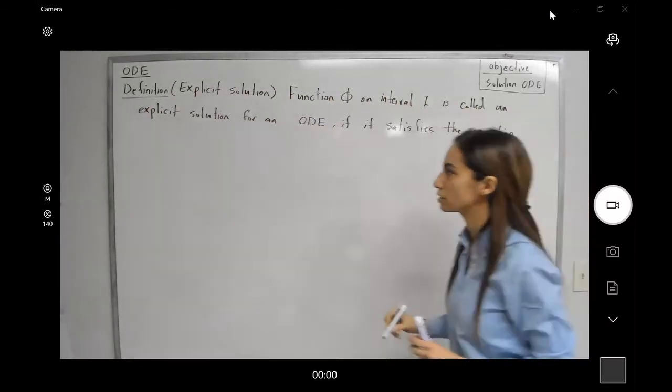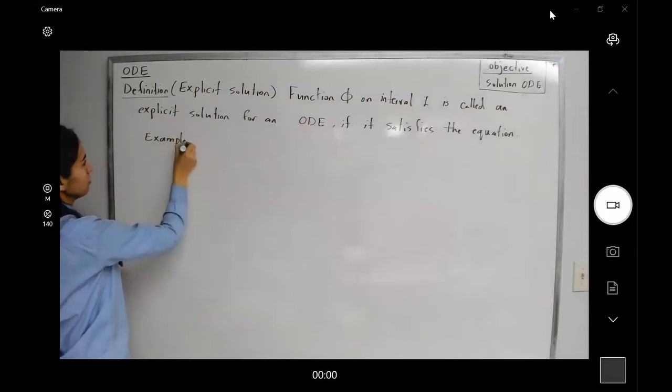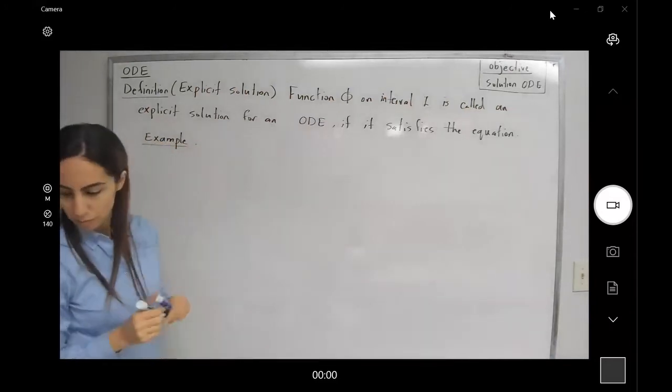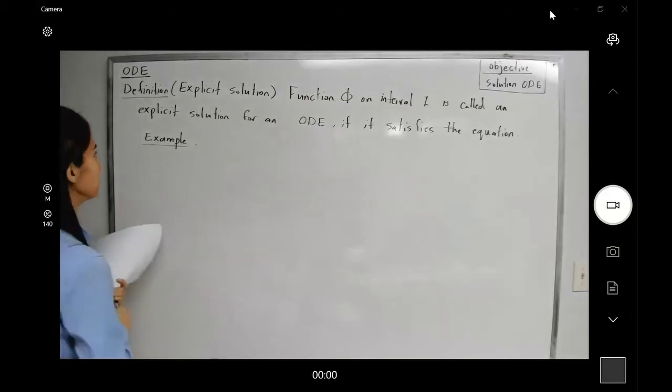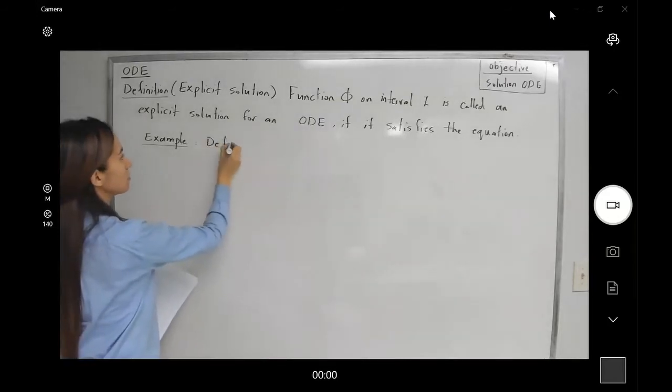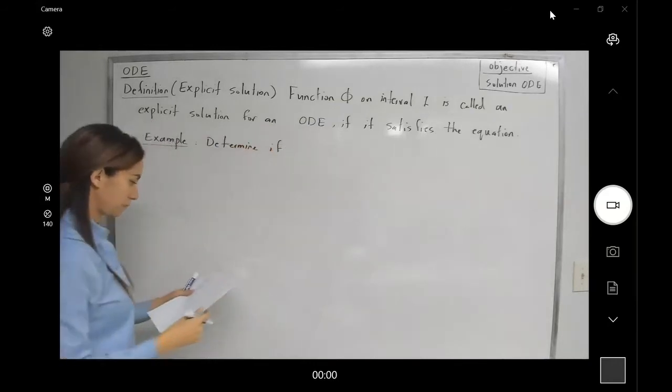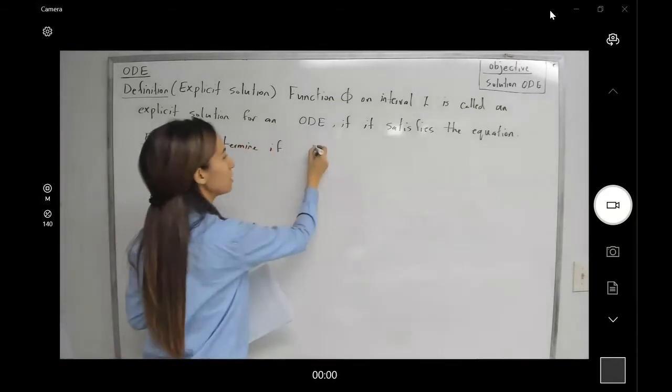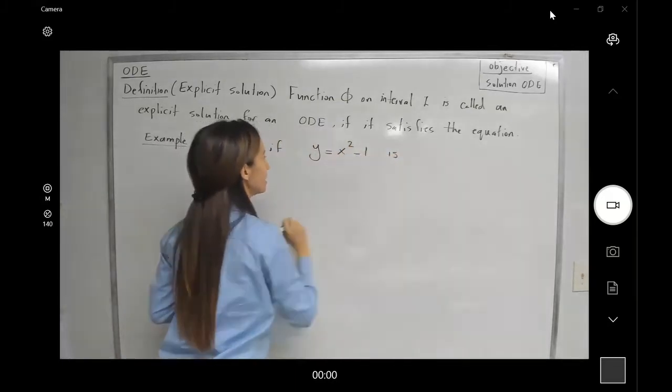Now let's take a look at an example to feel more comfortable about explicit solutions. This question asks us to determine if y equals x squared minus one is a solution